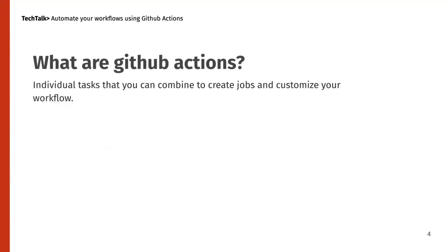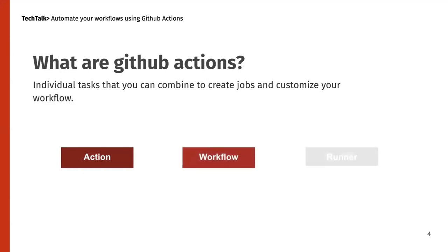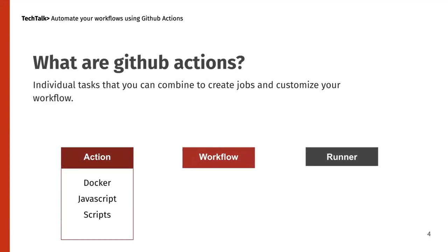GitHub Actions are individual tasks that you can combine to create jobs and customize your workflow. There are certain terminologies involved: an action, a workflow, and a runner. Actions are basically code or programs readily available — developed by the community or published by GitHub itself. We have Docker container-based actions, JavaScript-based actions, and scripts — for example, you can run bash scripts to perform various tasks.